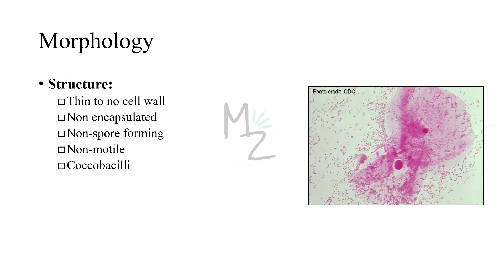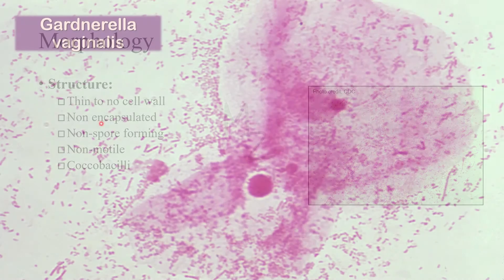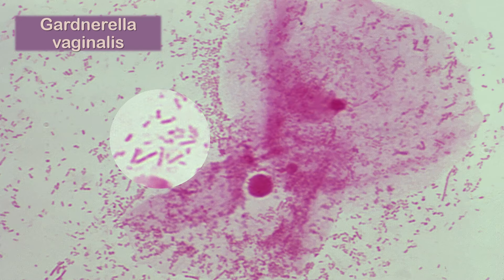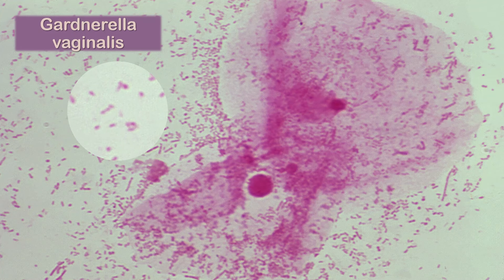Structure: Gardnerella has a thin to no cell wall. Normally it has a gram-positive cell wall, but the wall is thin, and in older organisms this wall is lost because of their age. Gardnerella is not capsulated, it is non-spore-forming, and it is non-motile. It is a coccobacillus — as you can see in this picture, this is the bacillus form and this is the coccus form. Let me zoom in so you can see clearly.